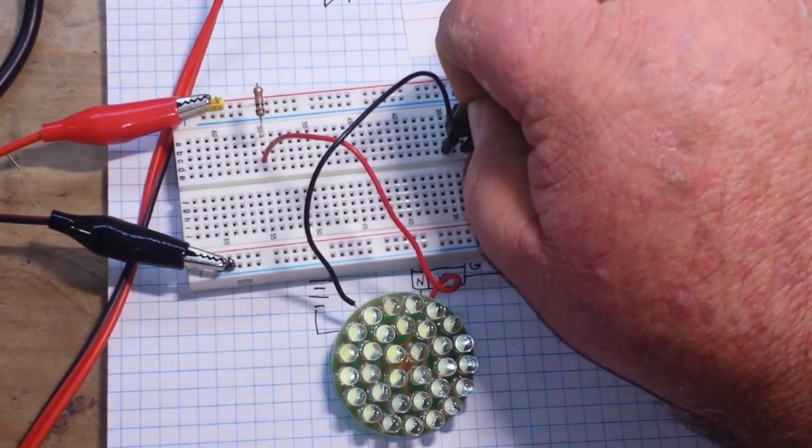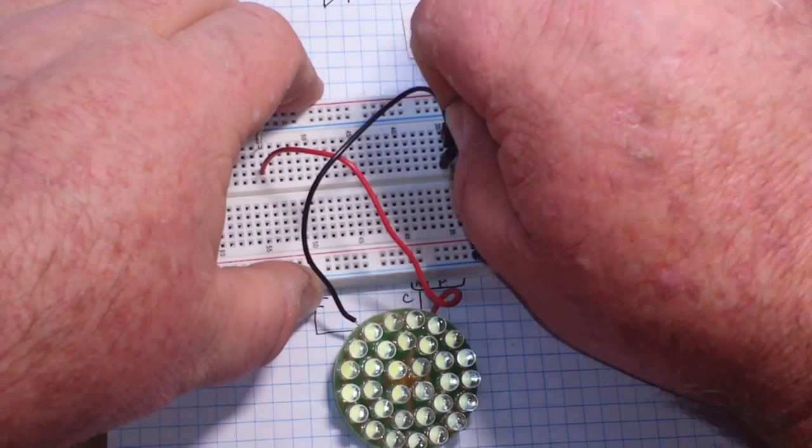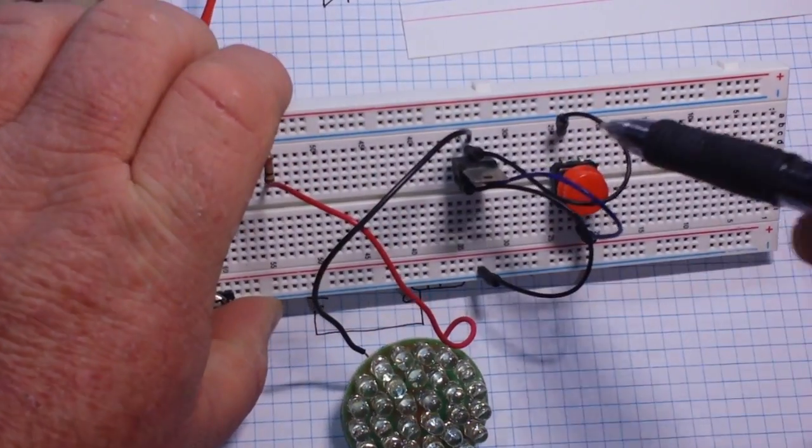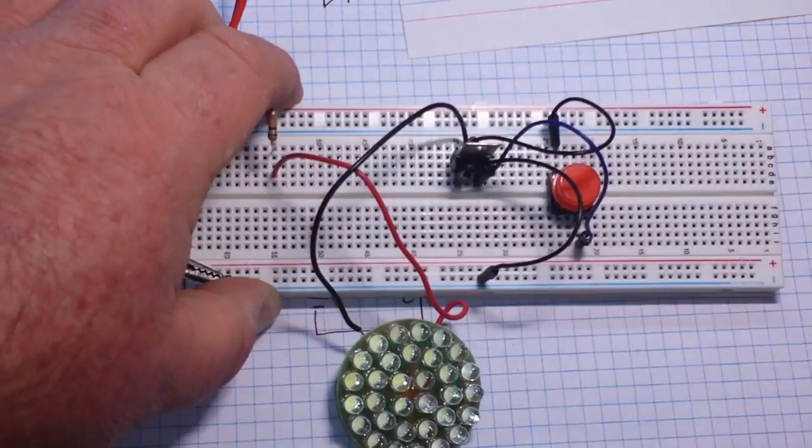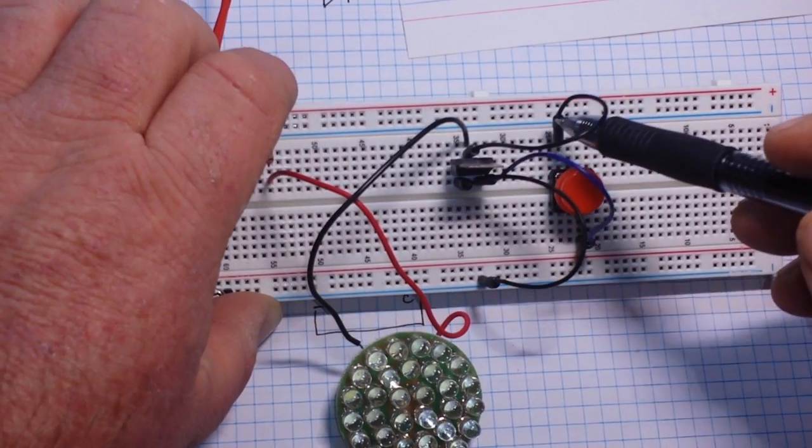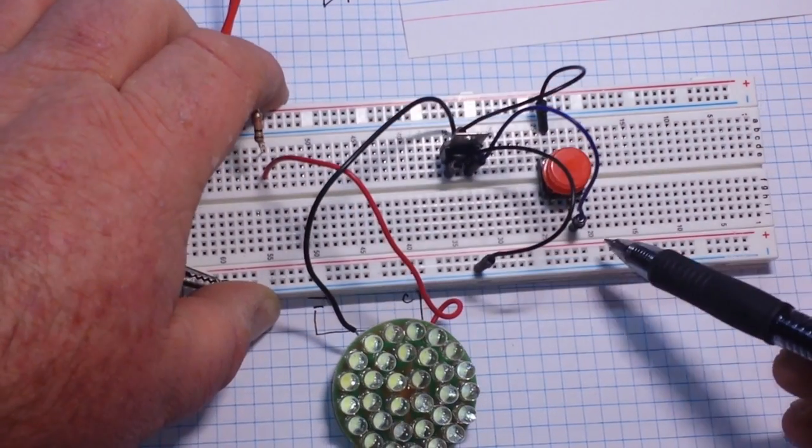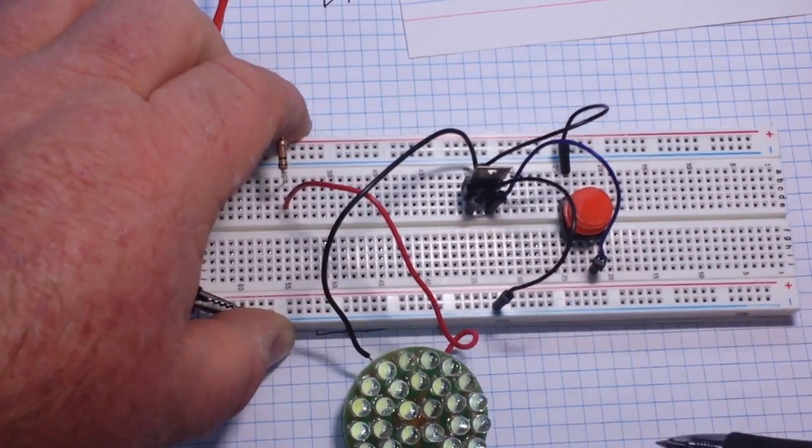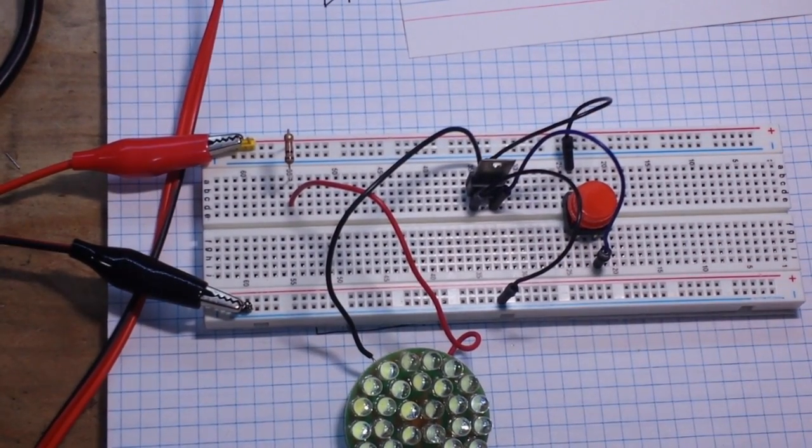Oh, good thing somebody checked that because that ain't right. There we go. It's running into the middle pin which is the anode of our SCR. And then out of that, it's running over to one side of the switch. The other side of the switch runs back into the gate, and the cathode runs back to ground.